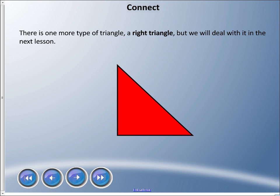There is one more type of triangle, and it's called a right triangle. But we're not going to deal with it today. We're going to deal with it in the next lesson because it has more to do with angles. And when you get to, I think, grade seven or eight, you're going to have a lot of fun with something called the Pythagorean theorem, and you're going to be using a lot of algebra with that.